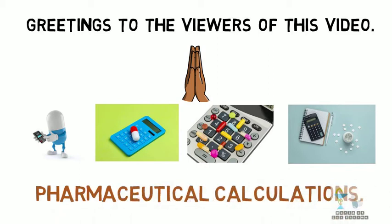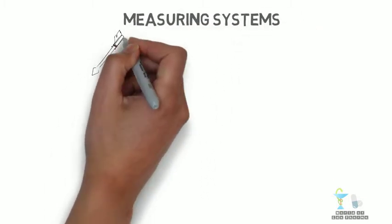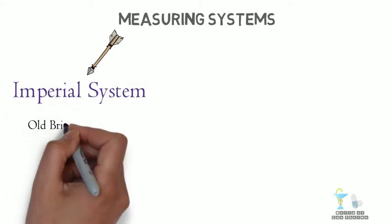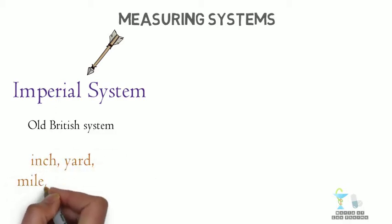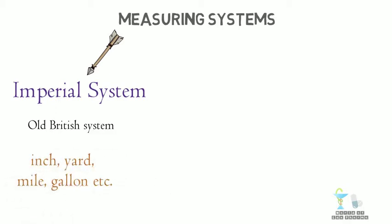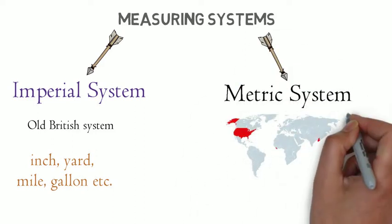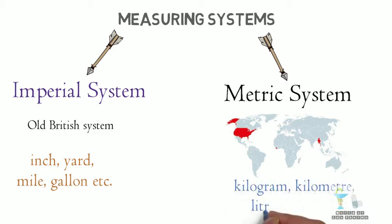Let us move on to the topic: types of measuring systems. One is imperial, which is the old British system that uses measuring units like inch, yard, mile, gallon, etc. The other one is the metric system, which is mostly used by people all over the world, and has measuring units such as kilogram, kilometer, liter, and so on.